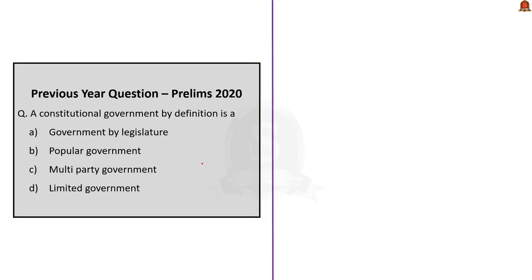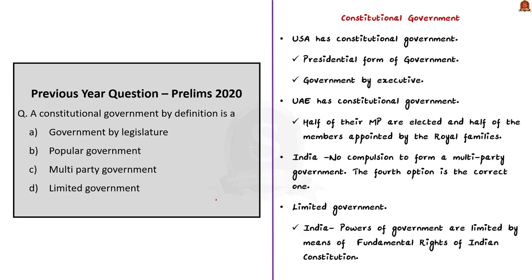Now let us move on to the next question. A constitutional government by definition is: Option A - government by legislature, Option B - popular government, Option C - multi-party government, Option D - limited government. A constitutional government is a government governed by a constitution. Now let us see each option individually and assess whether that option is right.